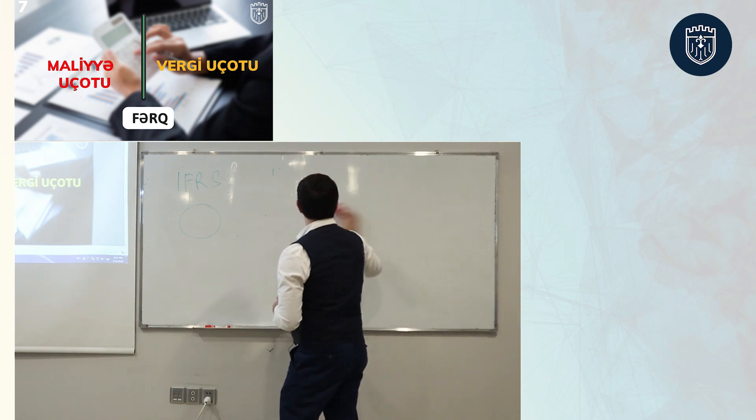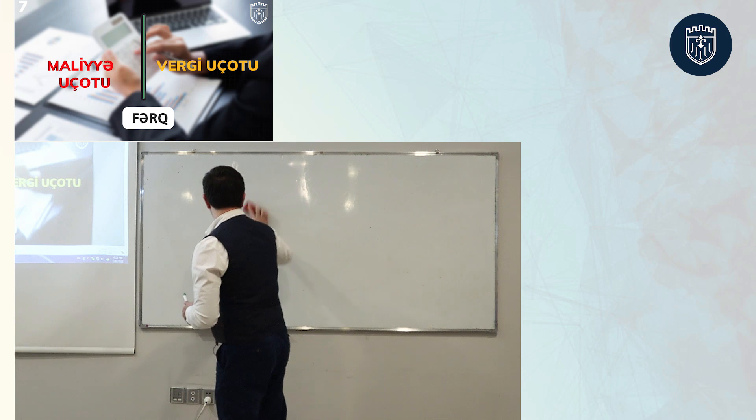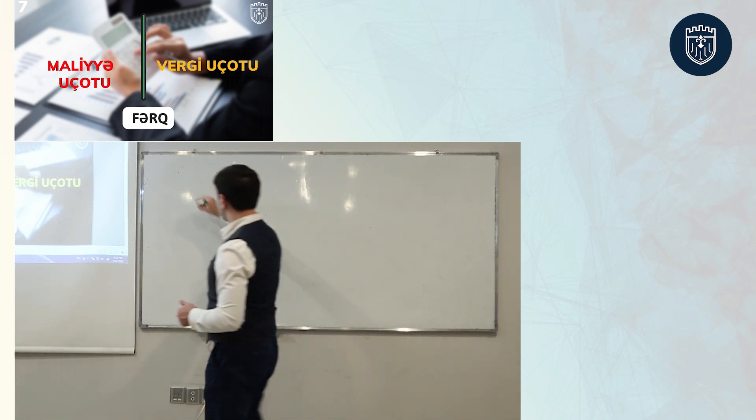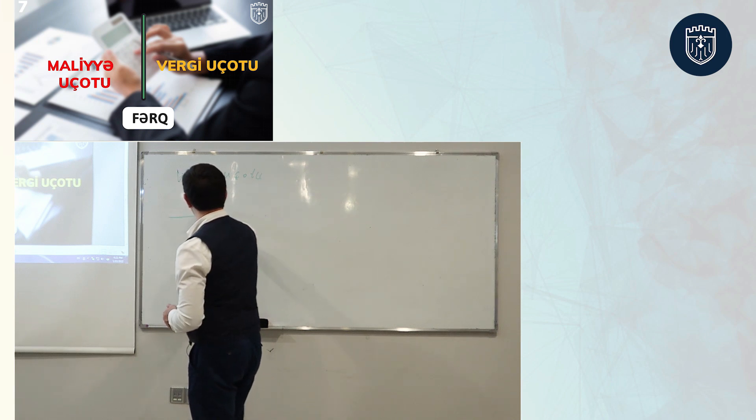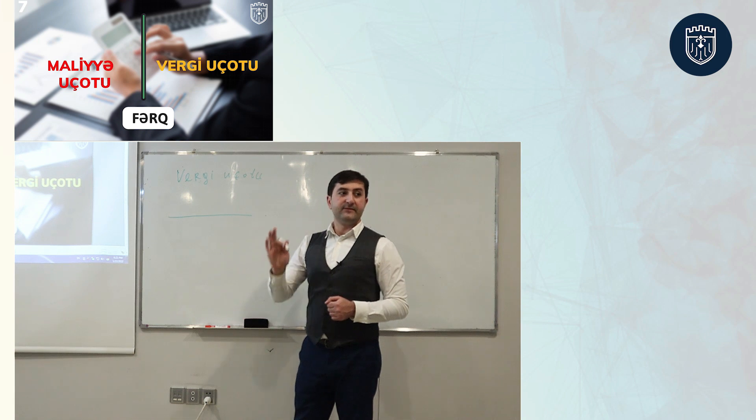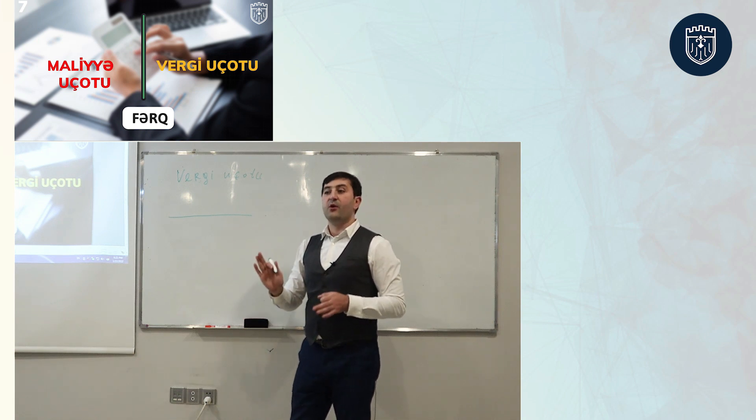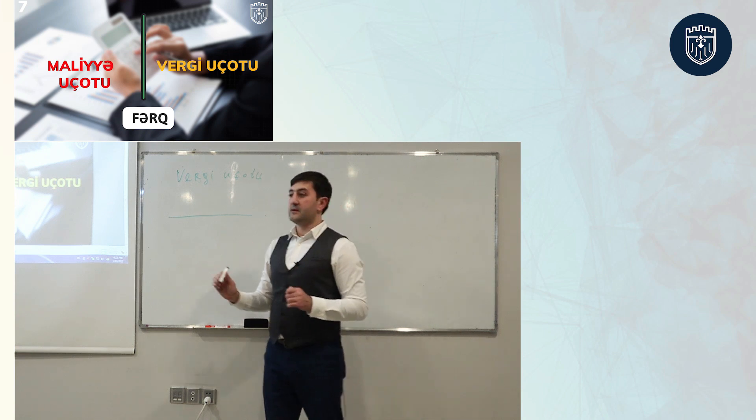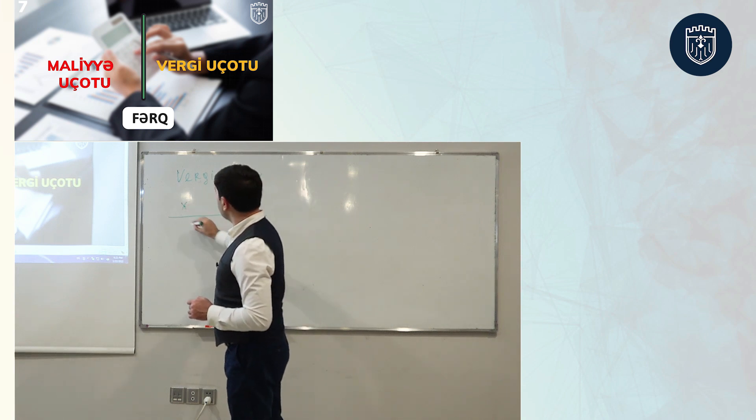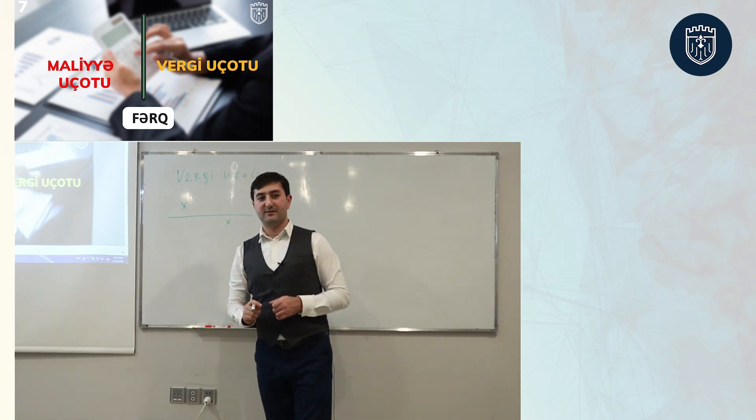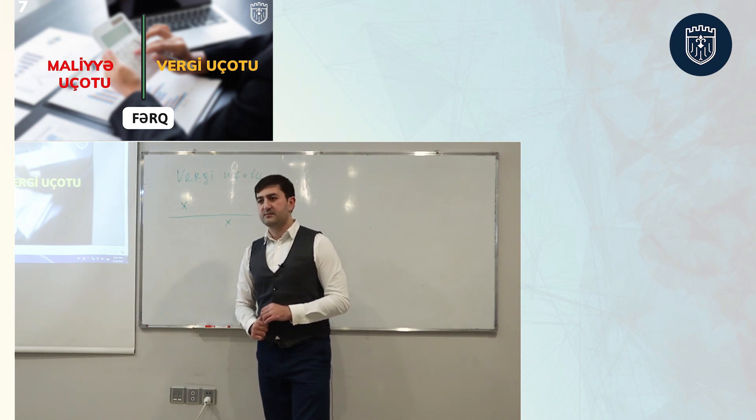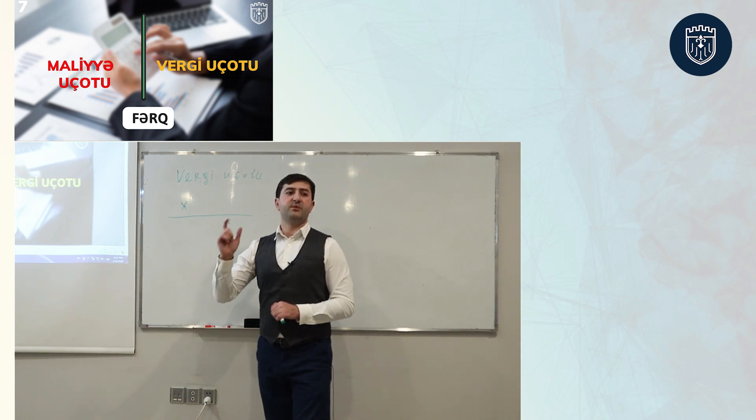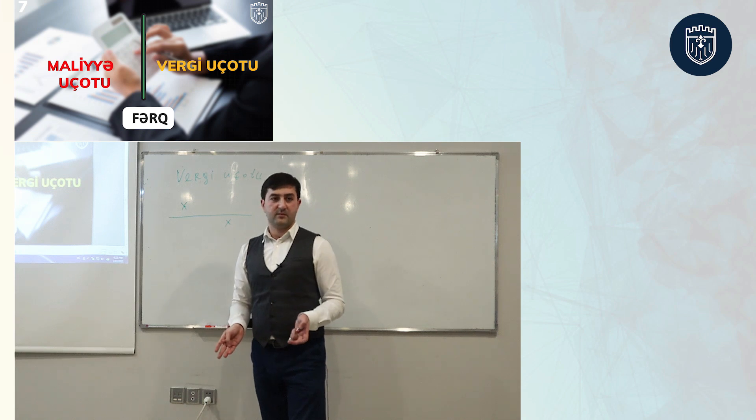Maliyyə uçotu ilə vergi uçotu arasındakı fərq: vergi uçotunun əsas məqsədi nədir? Vergi bəyannamələrinin hazırlanması. Vergi bəyannaməsinin hazırlanmasına qədər mühasibatlığın tərtib olunması. Maliyyə uçotu ilə vergi uçotunda əsas fərq nədən ibarətdir? Vergi uçotunda vergi istədəyi şeylərə baxılır, o maliyyə uçotunda faktiki alınan götürülür.